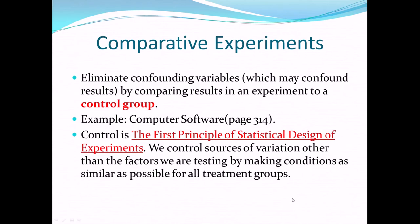Control is the first principle of statistical design of experiments — there are actually four. We control sources of variation other than the factors we're testing by making conditions as similar as possible for all treatment groups. For those folks that were rested and tired and taking drugs for their migraines, we'd really want them to have the same meals, the same amount of activity, the same amount of exercise, the same everything — the same exposure to screens. If you can standardize all their activities, the only thing that could cause an effect would be whether they're rested or tired interacting with their choice of drug.